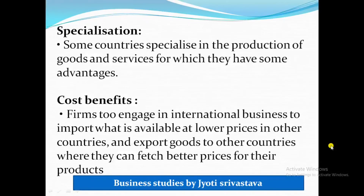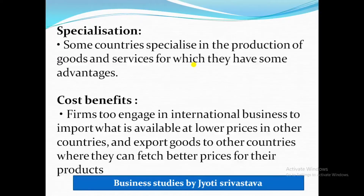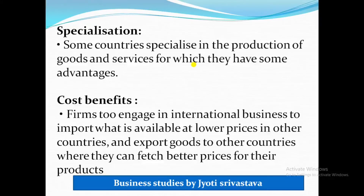The next reason is specialization. Certain countries are specialized in the production of goods and services for which they have advantages. For example, India can produce agricultural products efficiently and effectively, whereas Japan can produce electronic goods more efficiently and effectively compared to India. So the country that is specialized in producing a certain thing will produce it, and this specialization is one of the key reasons for international business.